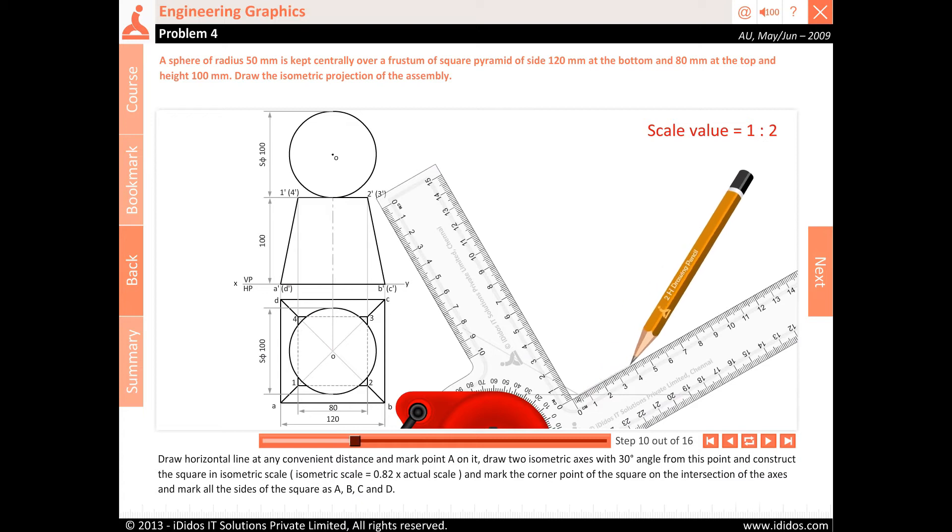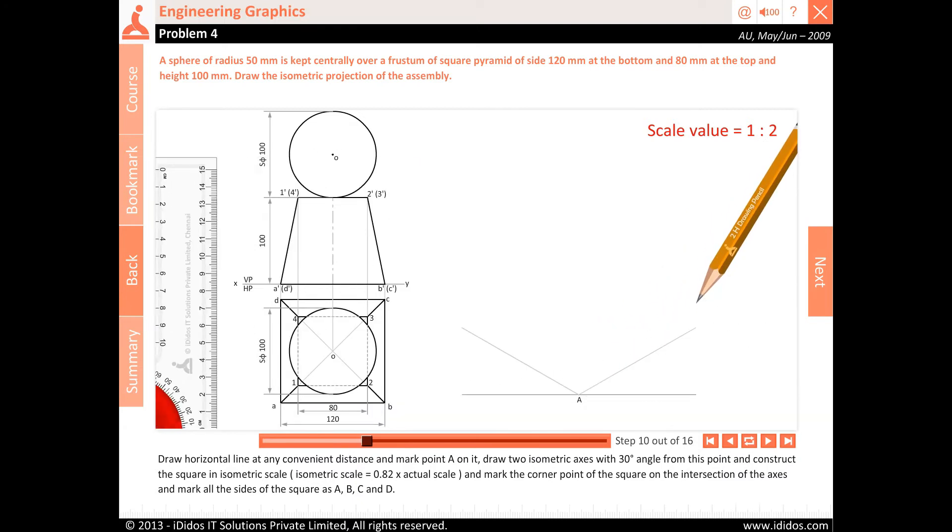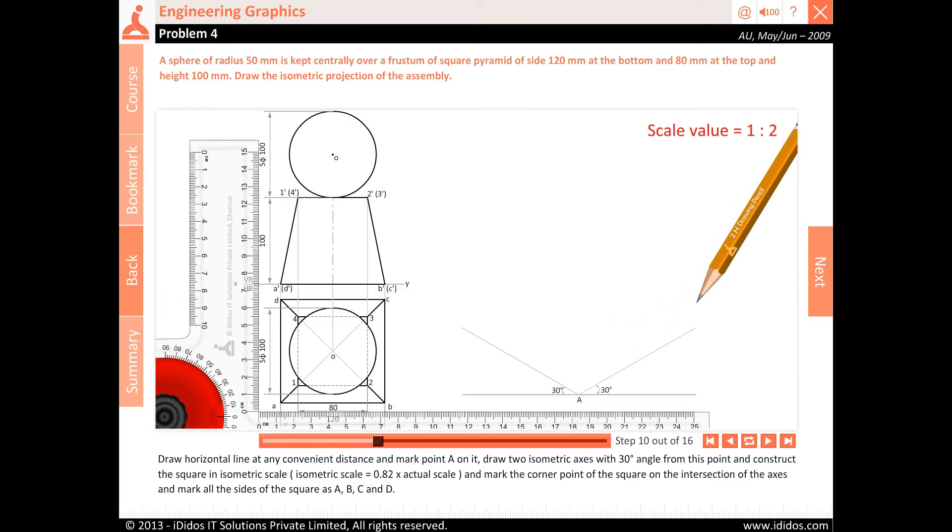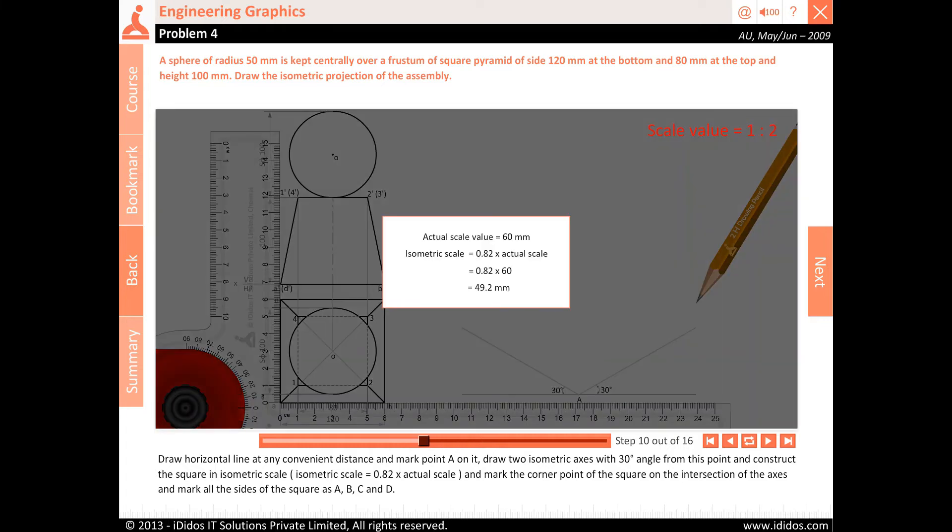Isometric scale equals 0.82 into actual scale. And mark the corner points of the square on the intersection of the axes and mark all the sides of the square as A, B, C and D.